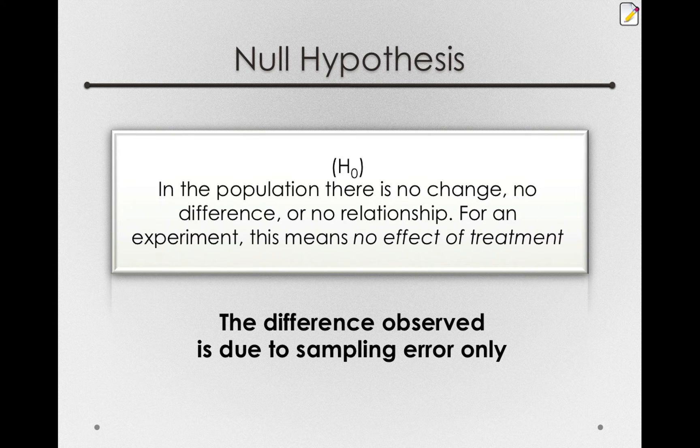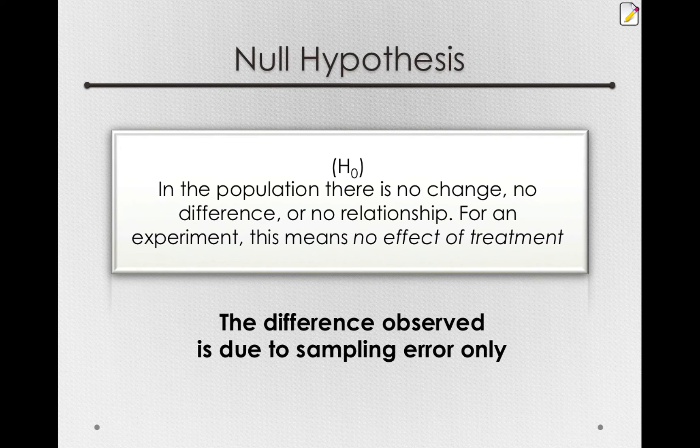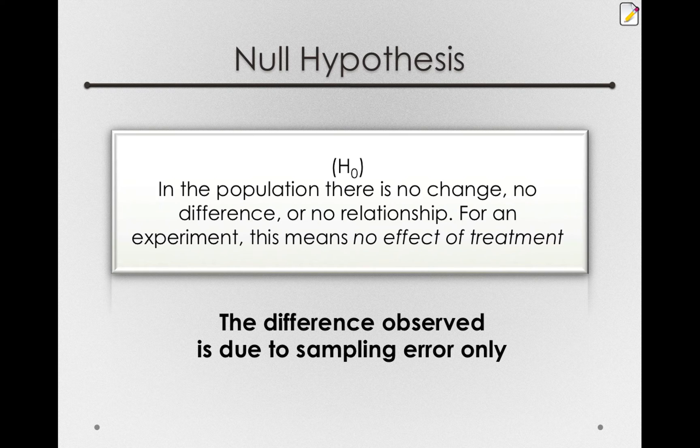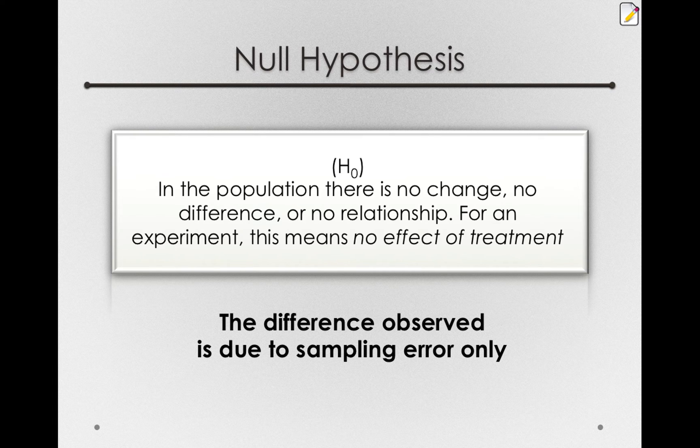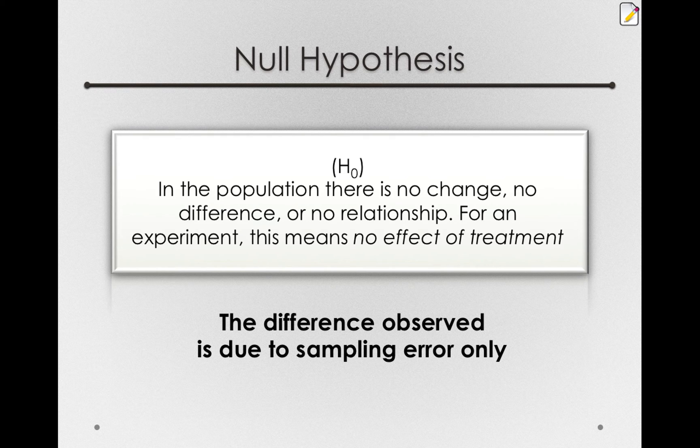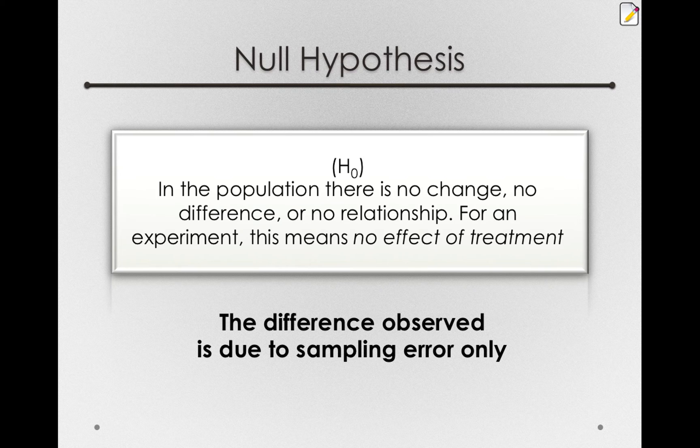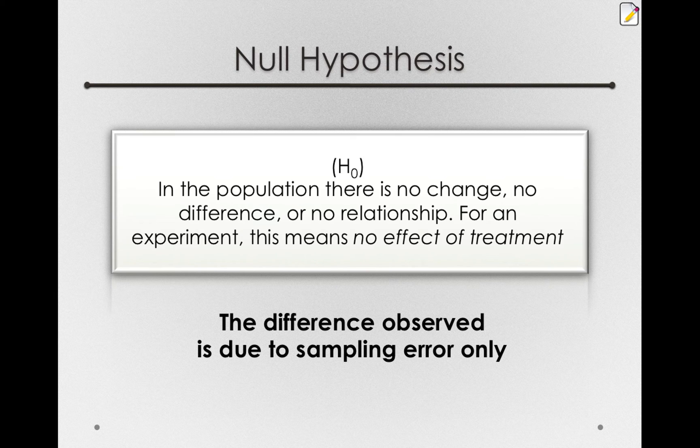The null hypothesis has a very critical place in science. It is the explanation we are obligated to use if it is reasonable. This is the most parsimonious explanation we can have for any difference obtained, because this explanation makes no statement about anything else happening in the world, other than something we know will always happen. Sampling error is always going to happen when we take a sample from a population. Our sample statistics will not match the population parameter. So sampling error will always be a part of any measurement we make. The null hypothesis says that whatever difference we obtain is simply that sampling error we know will always be there.